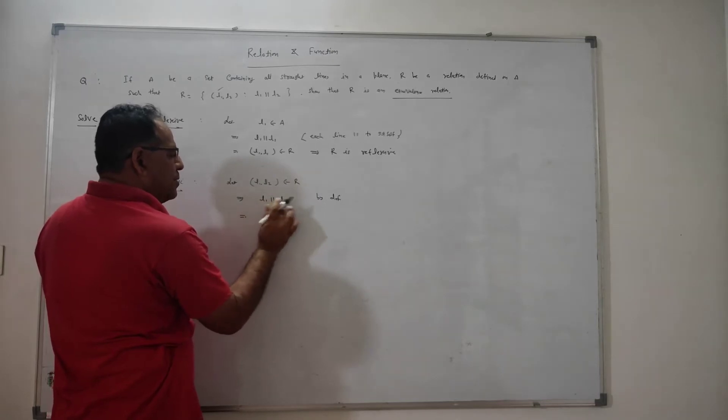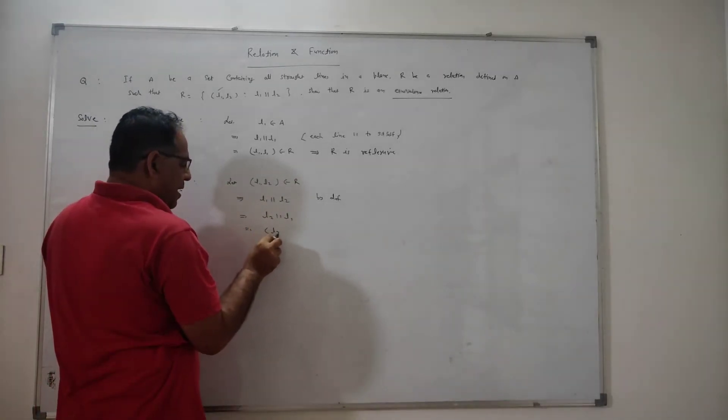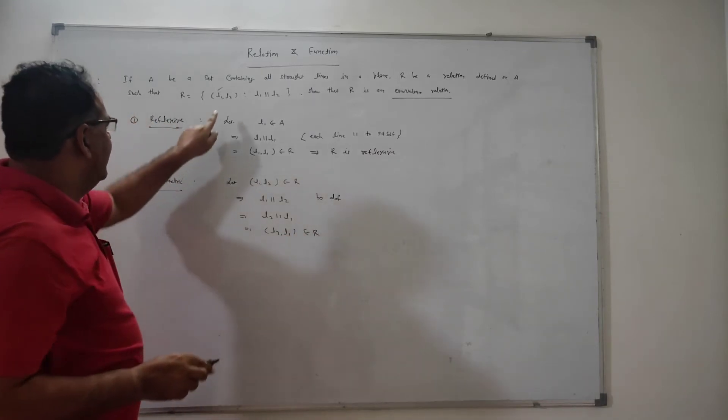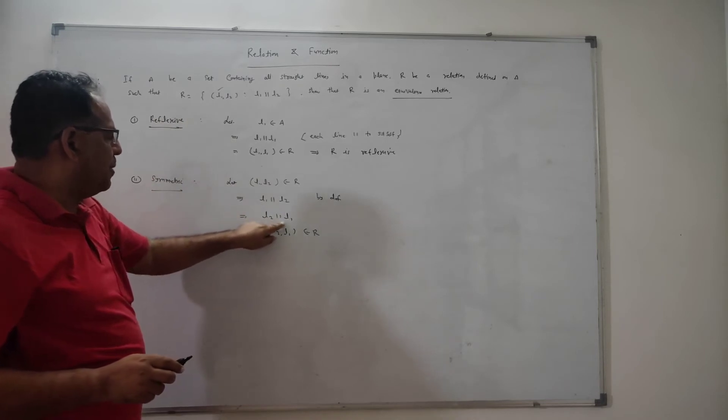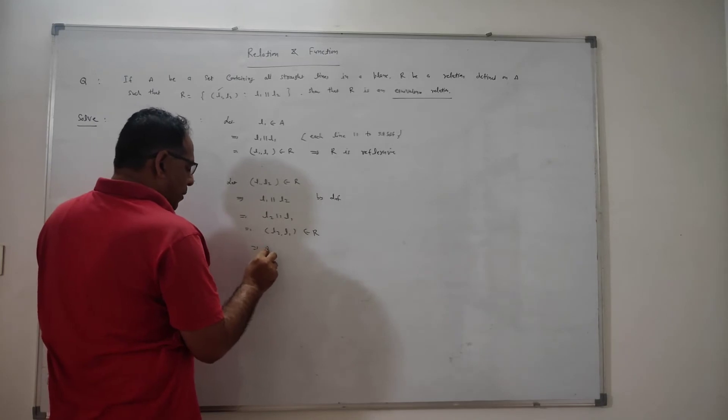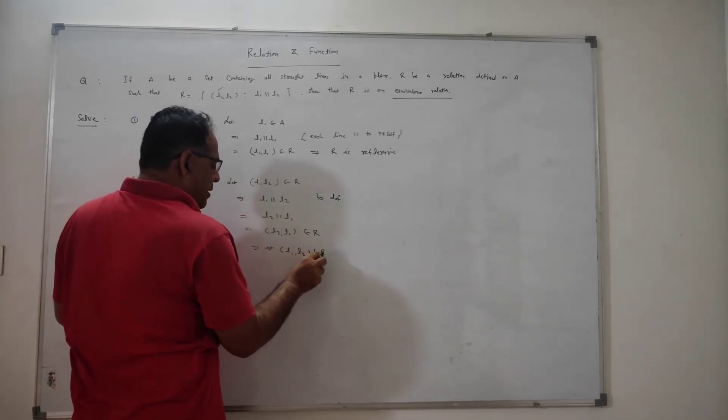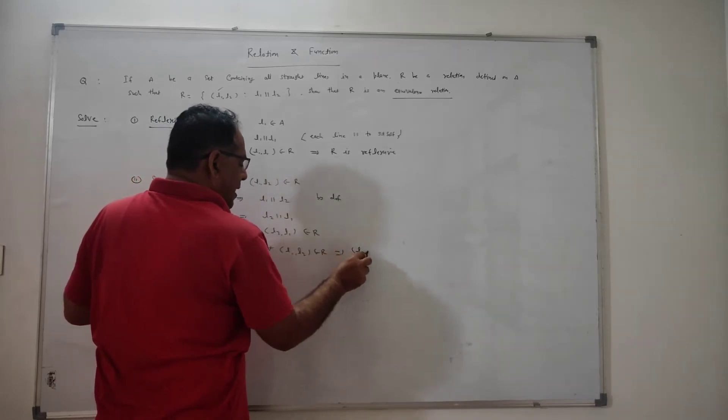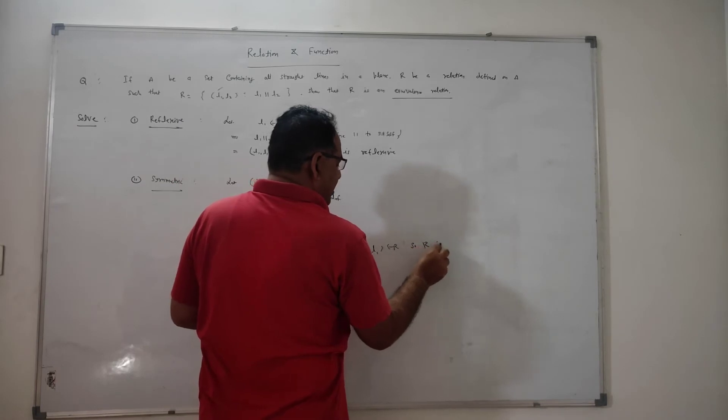In a similar manner, if L1 is perpendicular to L2, then clearly L2 is perpendicular to L1. Now we can write that (L2, L1) belongs to R. Because if L1 is perpendicular to L2, then (L1, L2) belongs to R. Similarly, if L2 is perpendicular to L1, then (L2, L1) belongs to R. This shows that (L1, L2) belongs to R implies (L2, L1) belongs to R, so R is symmetric.